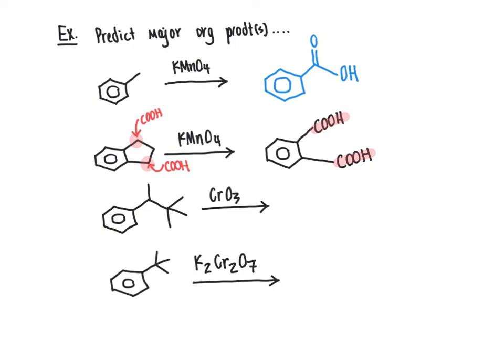In the next question, we have a benzylic carbon that does have a CH group bonded there — it is not a quaternary carbon, it's a tertiary carbon. So there is a C-H bond there, and therefore it is subject to oxidation with our oxidizing agent, CrO3, which has chromium in the sixth oxidation state. We simply replace that benzylic position carbon with a COOH group and don't need to worry about the rest of the alkyl group atoms.